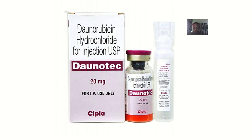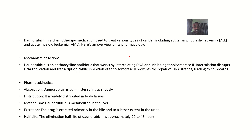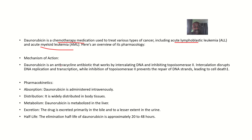Daunorubicin is a chemotherapy drug — that is, a drug used in treating cancer in chemical form. It is used to treat various types of cancers, including acute lymphoblastic leukemia and acute myeloid leukemia.